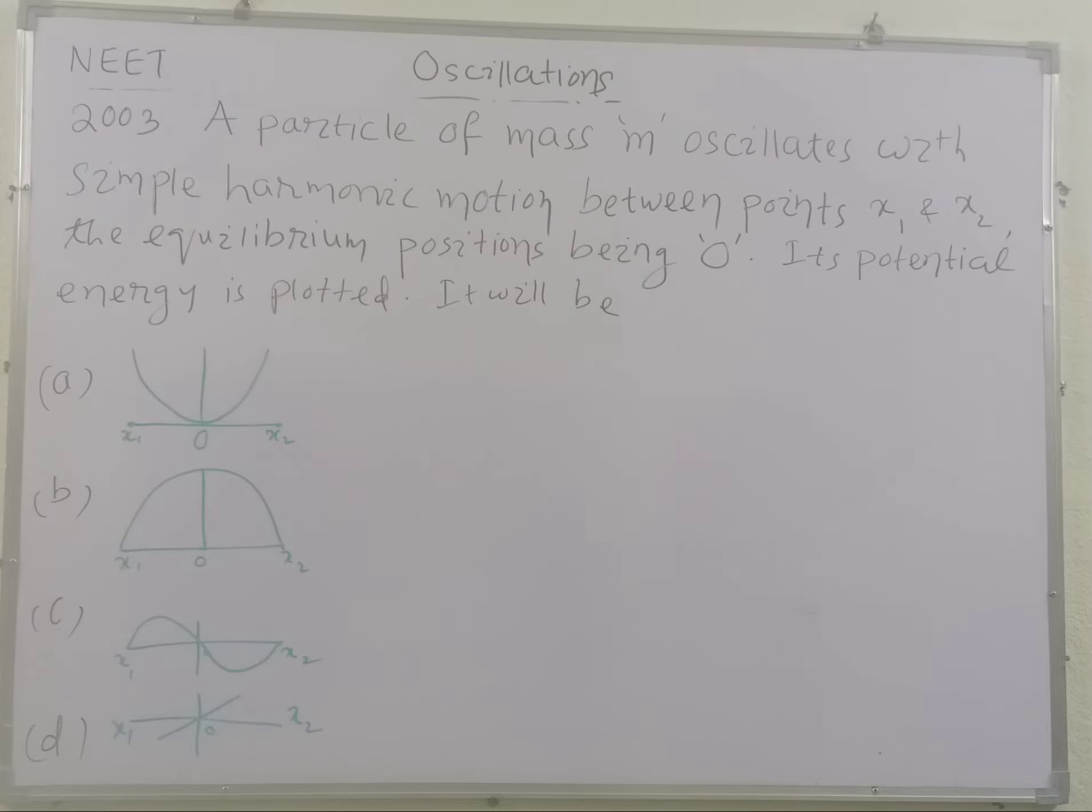This question was asked in NEET 2003 from the chapter Oscillations. A particle of mass M oscillates with simple harmonic motion between points X1 and X2. The equilibrium position being O. Its potential energy is plotted. It will be how much?